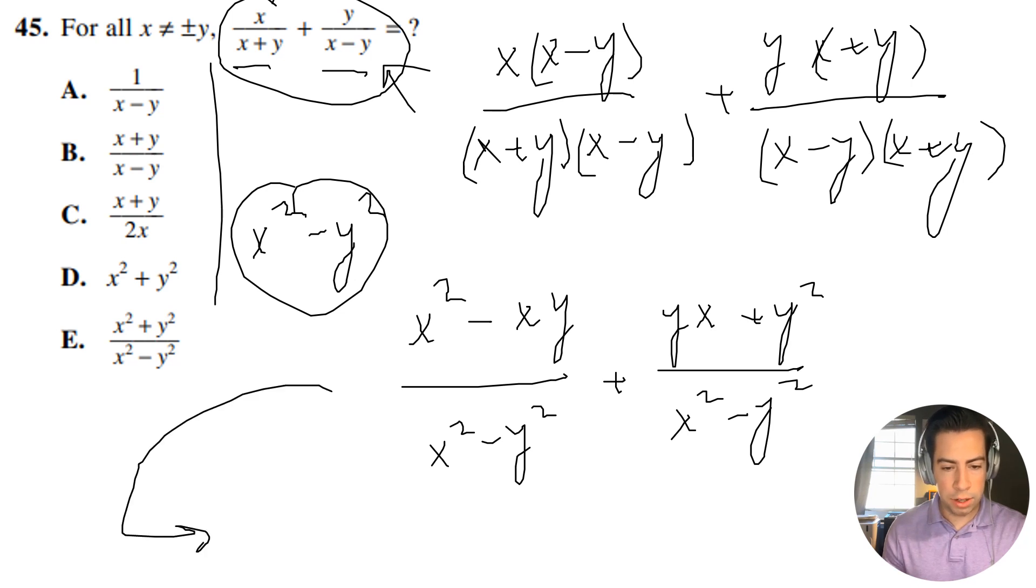All right, guys, so whenever we simplify this down, as you can see, these yxs are going to cancel out. So I'm going to be left with x squared plus y squared over x squared minus y squared. All right, guys, so that is our final answer. We simplify it down.